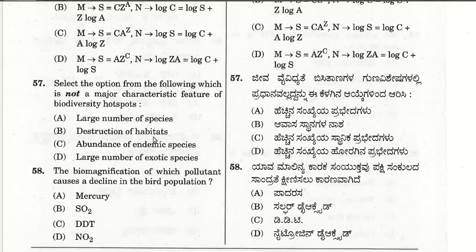The fifty-eighth question: biomagnification of which pollutant causes a decline in bird population? The answer is DDT (dichlorodiphenyltrichloroethane), because DDT causes egg shells to become weak and when the bird lays eggs they break.